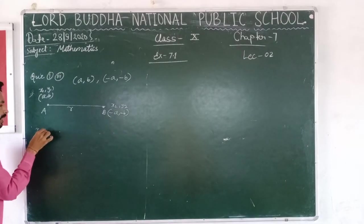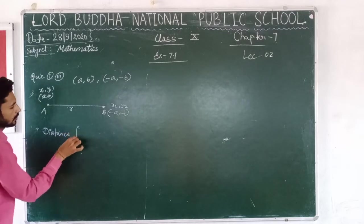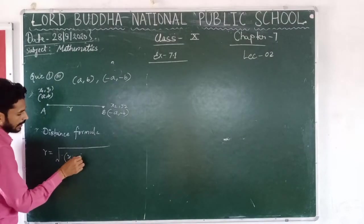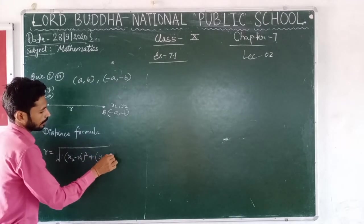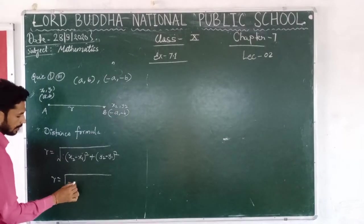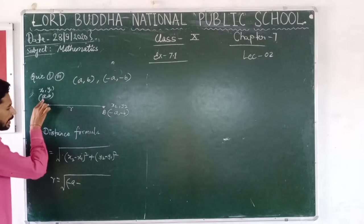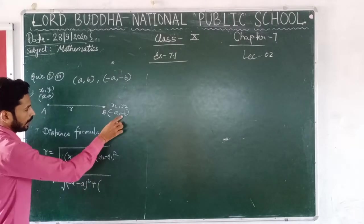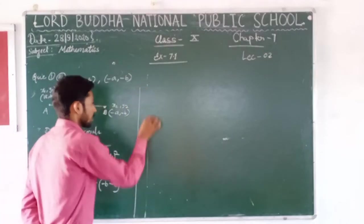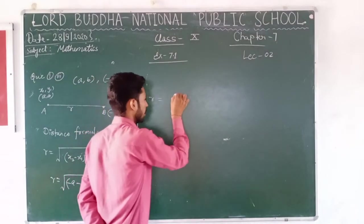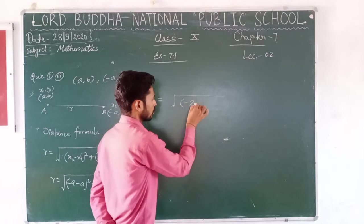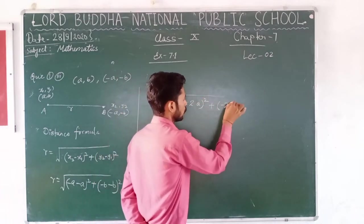By the distance formula: r equals to square root of (x2 minus x1) whole square plus (y2 minus y1) whole square. Now r equals to square root of: in place of x2 put minus a, and also take minus x1 which is a, whole square, plus y2 minus y1, which is minus b minus b, whole square. So here we can write minus 2a whole square, and plus minus 2b whole square.